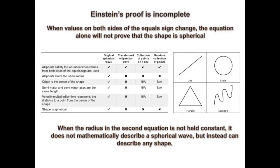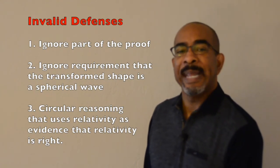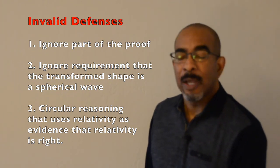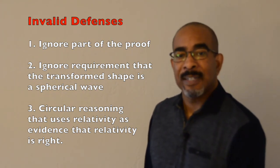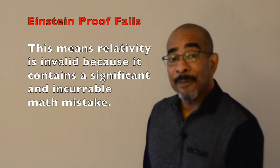Now some might offer a counter-argument that says, well, it is a spherical shape if you take the perspective of the moving observer, or if you consider simultaneity, or if you consider length contraction, or any relativistic term. This is why Einstein's proof is so important, because his very first sentence he says relativity doesn't exist yet until the sixth sentence. So therefore, none of those defenses can be used until after the sixth sentence, and we're arguing mistakes that happen in the fourth and fifth sentence. That's the power of this discovery, and it's also why Einstein's proof fails.